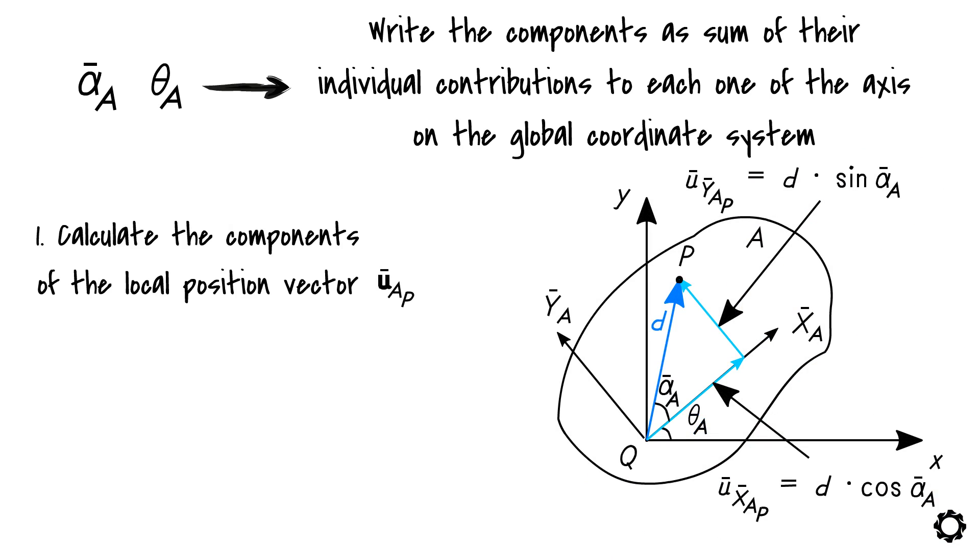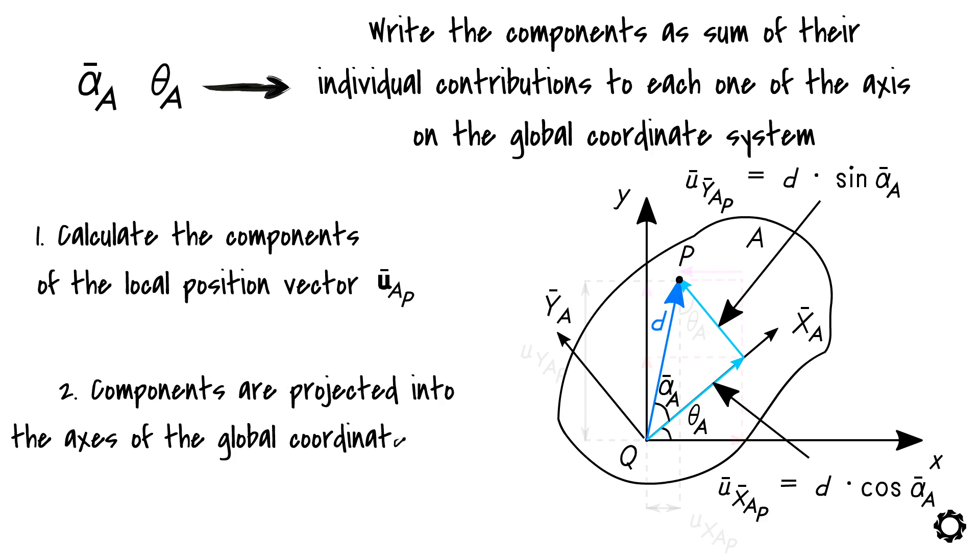The results are represented by the blue arrows. Then these components are projected into the axis of the global coordinate system.